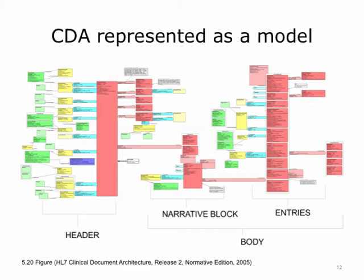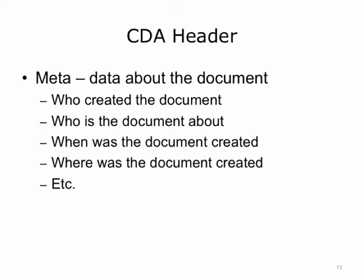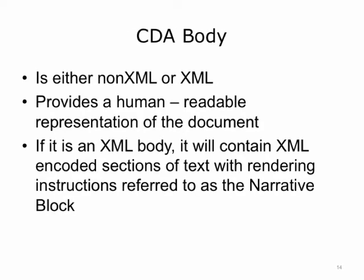The header on the CDA information model looks relatively big, but what the header contains is metadata about the document — such as who created it, who it is about, when it was created, where it was created, etc. The CDA body is either non-XML or XML. It provides a human-readable representation of the document. If it is an XML body, it will contain XML-encoded sections of text with rendering instructions referred to as the narrative block. The narrative block provides for the rendering of a human-readable document.